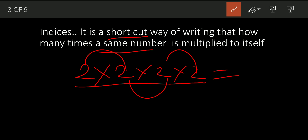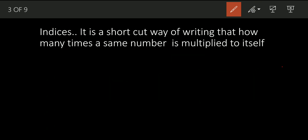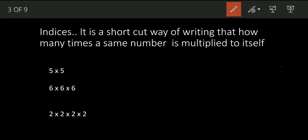Mathematicians have found a shortcut to write all of this, and that is what we call indices. Now, two into three is just simple multiplication, but in indices we multiply the same number many times. For example, five into five — here I have multiplied the same number two times.